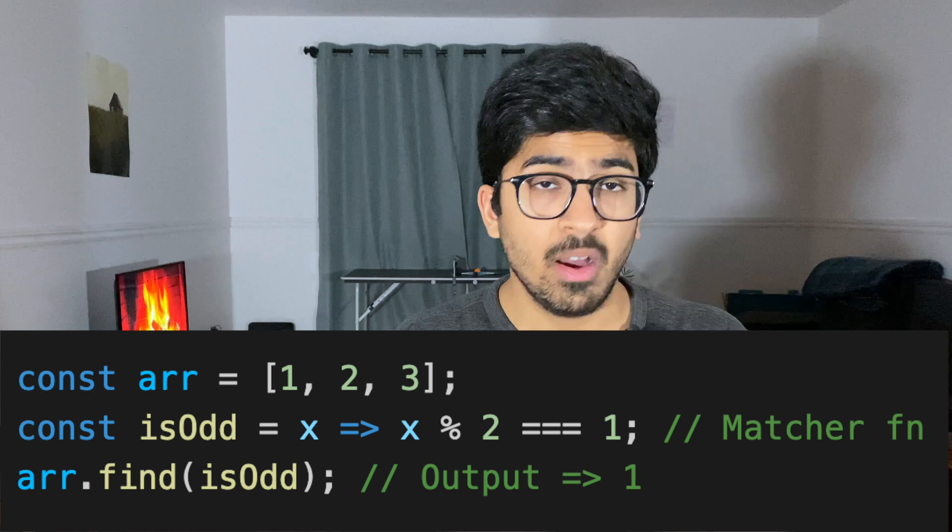However, if we apply that into JavaScript and now try to use this function to give us an element which is an odd number, what we'll do is we'll do array.find and we'll pass the matcher function. This is called a matcher function. However, it's important to notice that yes, we will get an element in the end, which is one. However, three is also an odd number.